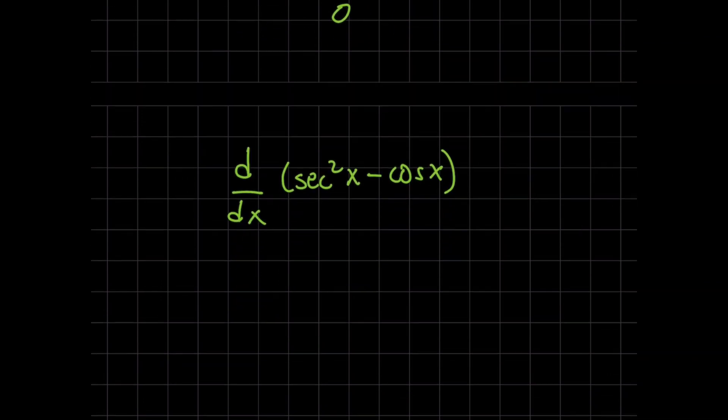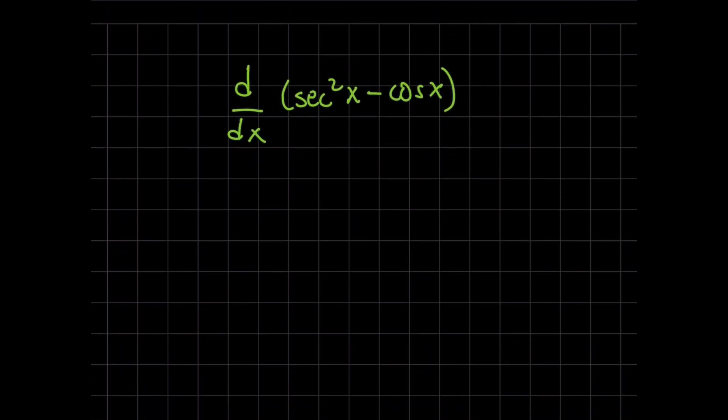The derivative of secant squared of x, using the chain rule, you put the two in front to get two secant of x times the derivative of secant of x, the inside function, that actually expands to secant of x tangent of x. And then minus the derivative of cosine of x, well that's a negative sine of x, and so the minus minus becomes a plus.